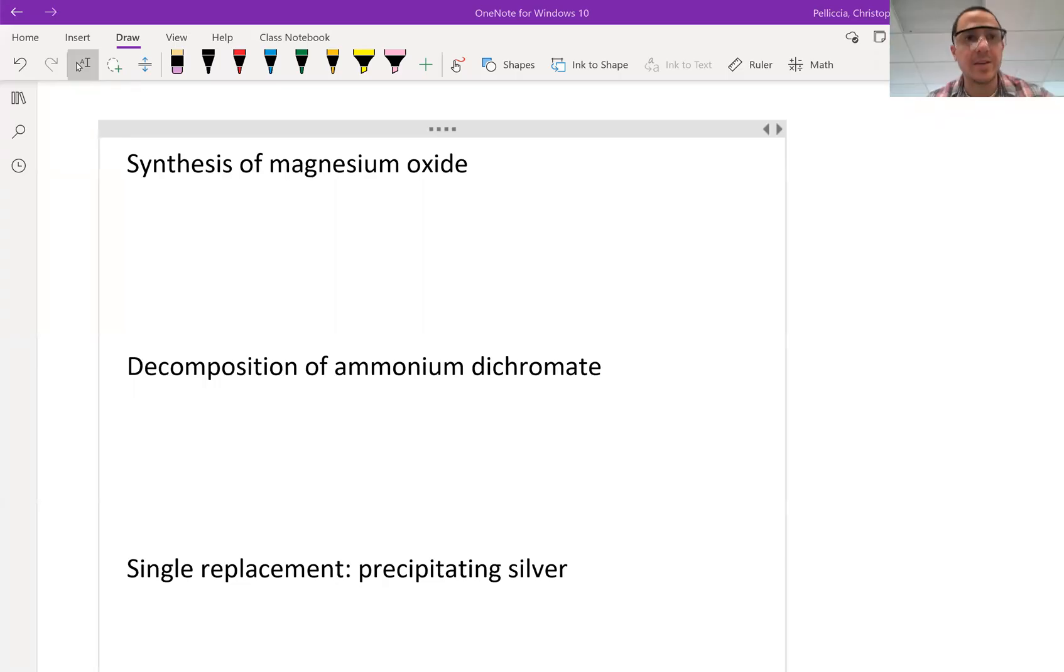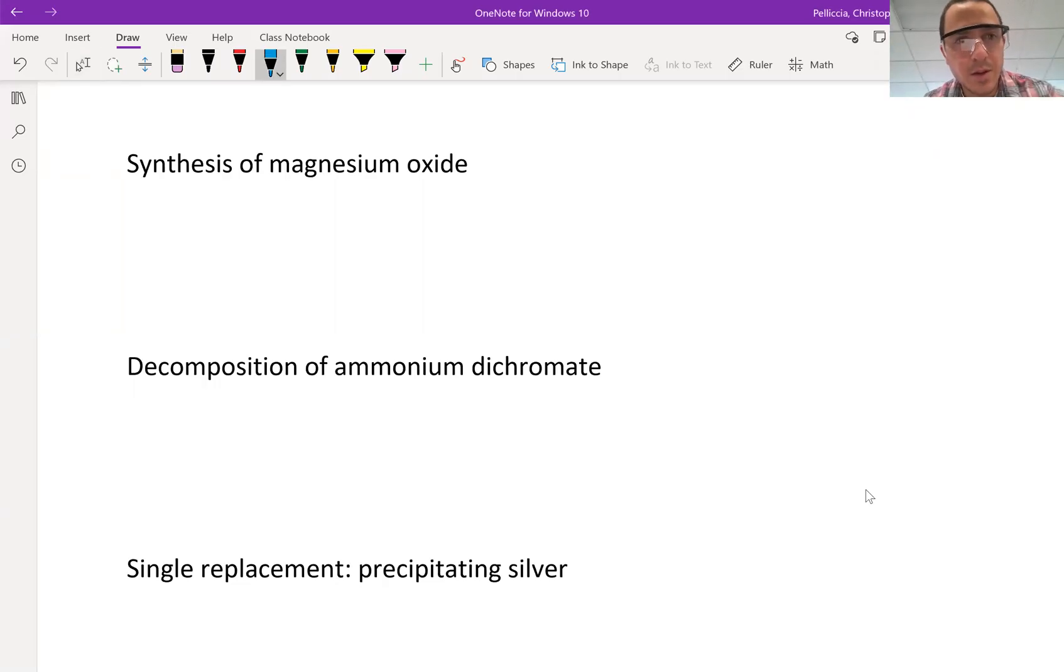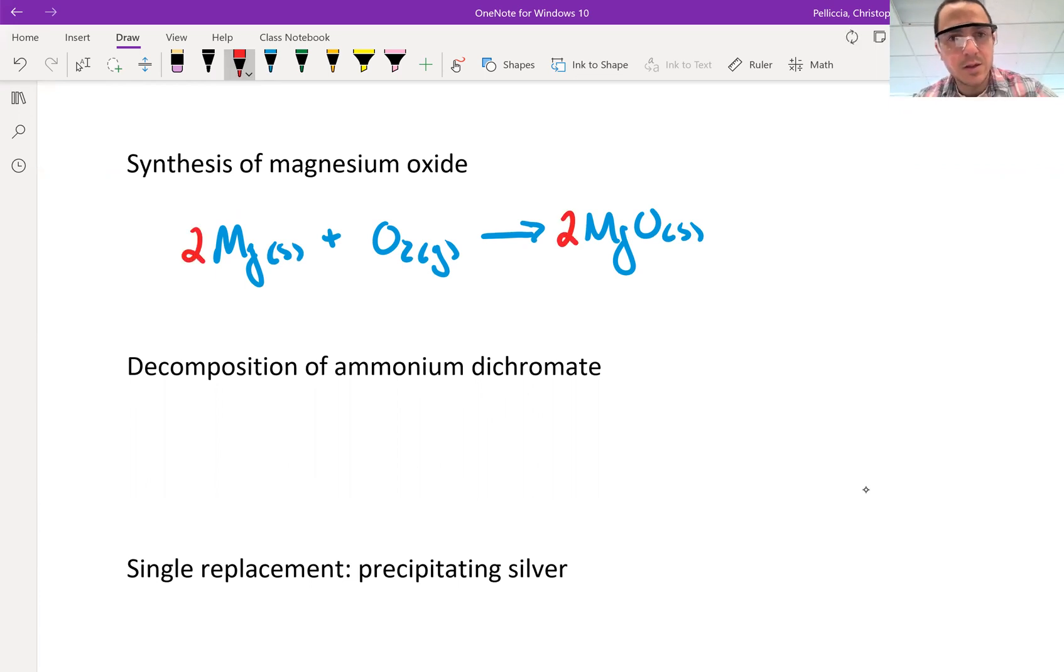This reaction can be represented as solid magnesium plus oxygen gas yielding solid magnesium oxide. And I need to balance that such as that.